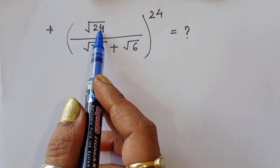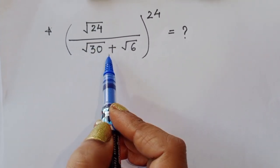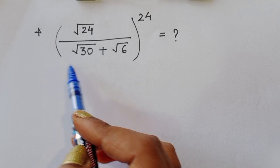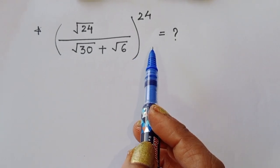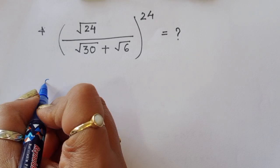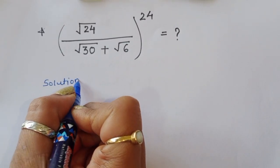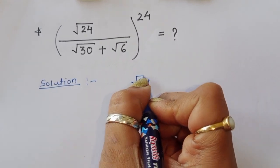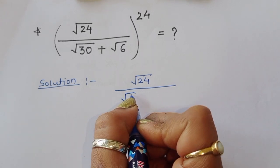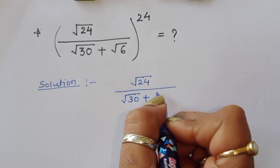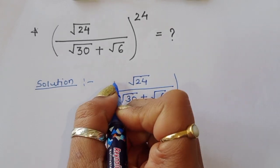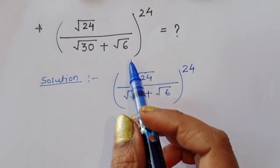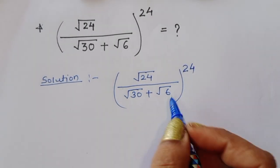The question is: find the value of the square root of 24, divided by the quantity square root of 30 plus square root of 6, raised to the power of 24. We have to find the value of this expression without using a calculator. Let's see the solution and how we can find out the value.